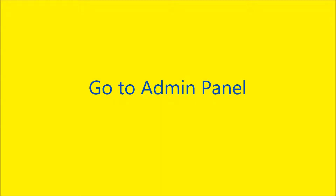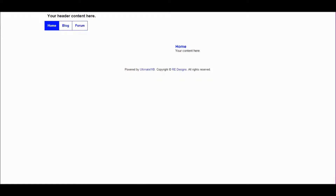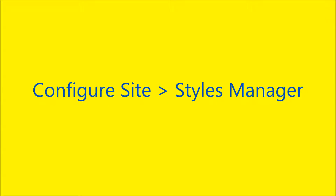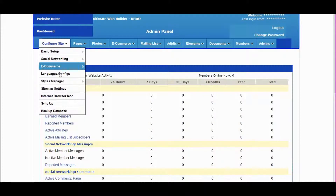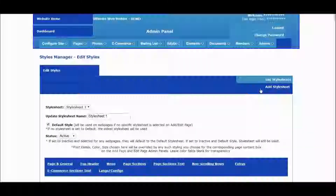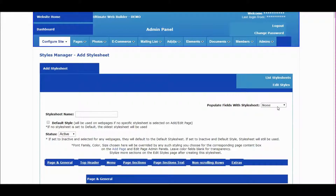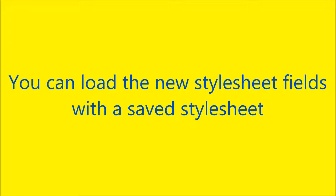Go to the admin panel. Mouse over the configure site menu and click on styles manager. Let's create a new style sheet — go to add style sheet. Here you can load the new style sheet fields with a saved style sheet.